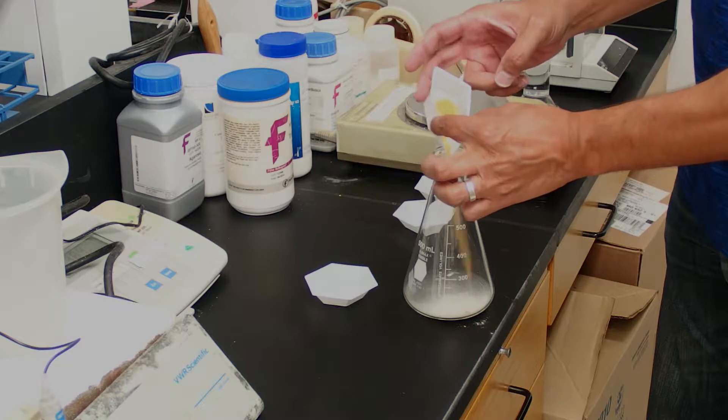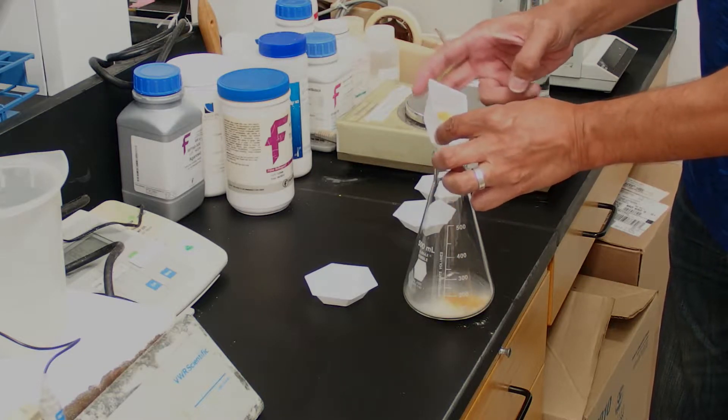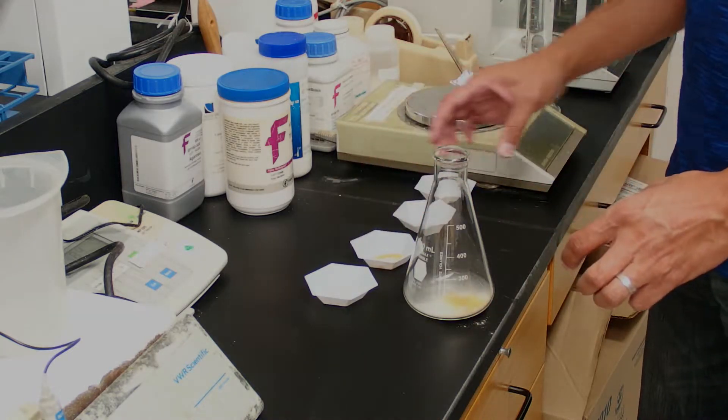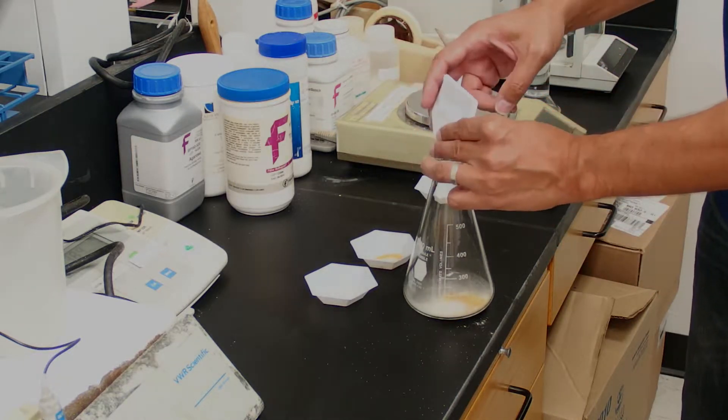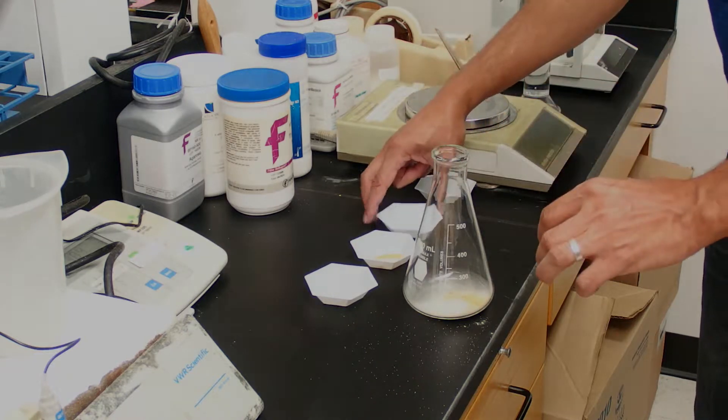Now if we want it to be more exact, we would add all of these things to a beaker, dissolve them, bring them to volume. But here what we're going to do is just make this directly in the flask because it works good enough for making agar plates.